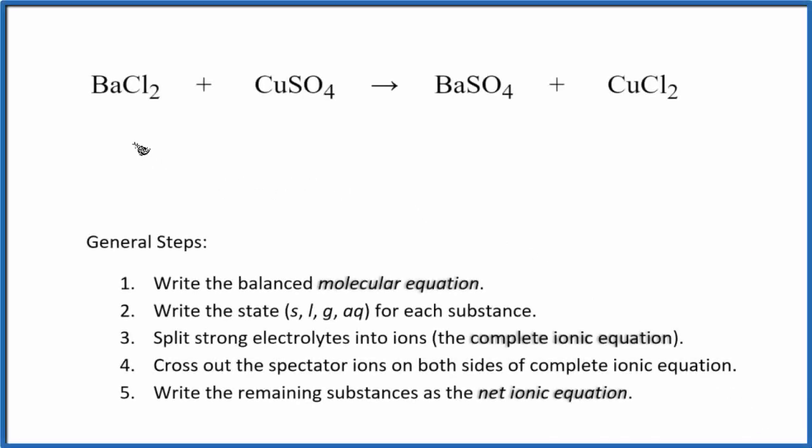In this video, we'll write the net ionic equation for BaCl2 plus CuSO4. This is barium chloride and this is copper sulfate.